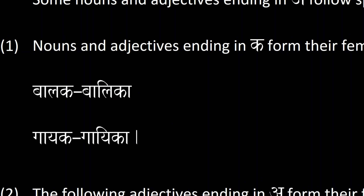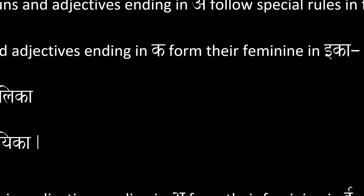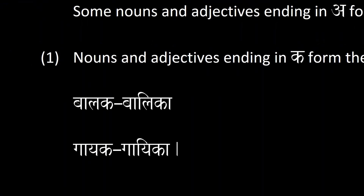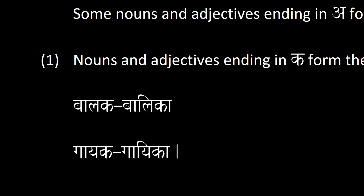Gāyaka is a male singer, and gāyikā is a female singer. Notice how the 'ikā' ending is what is turning it feminine when you are adding it to a noun or adjective ending in 'ka'.